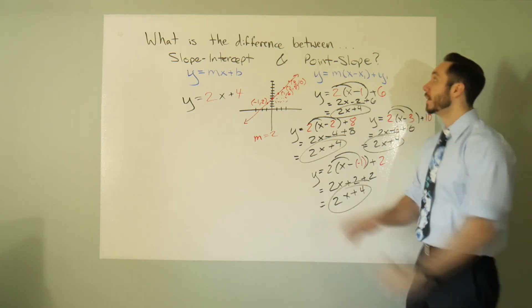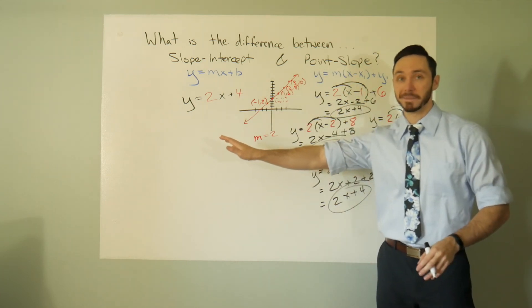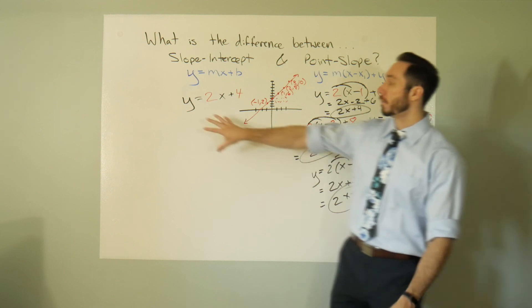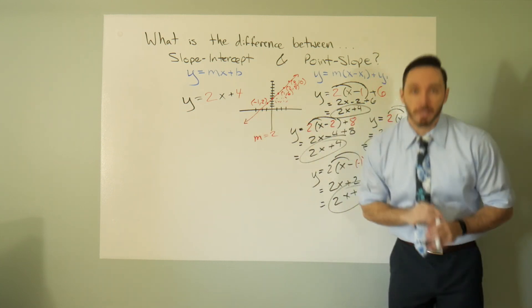Point being: when you simplify point-slope, you get to slope-intercept. Say that three times fast! Difference between them: y-intercept, random point. Please continue to math on, I'll do the same. I'll see you in the next video.